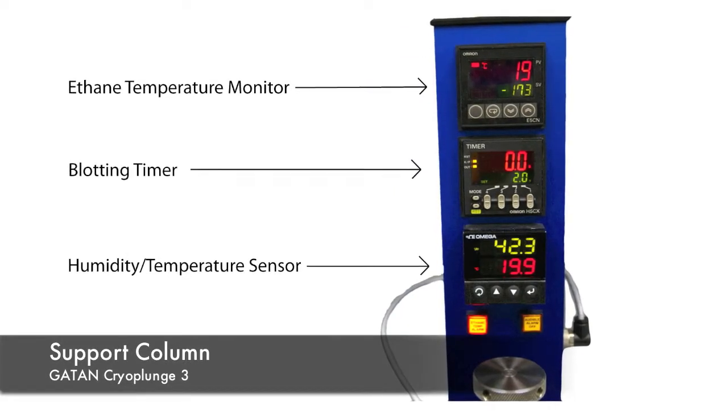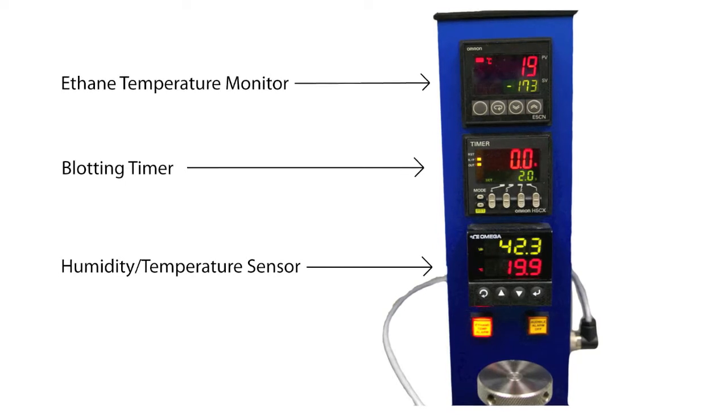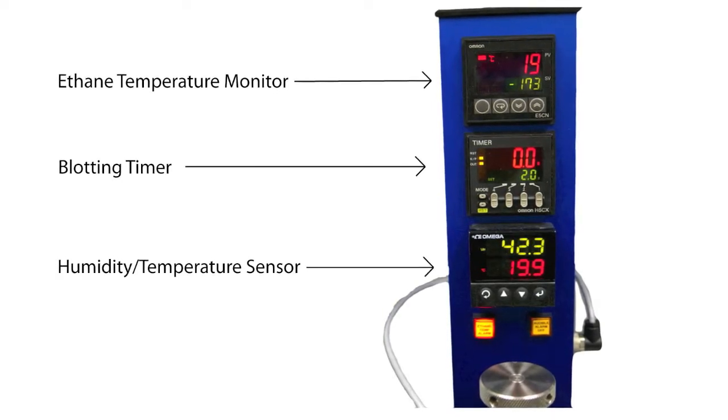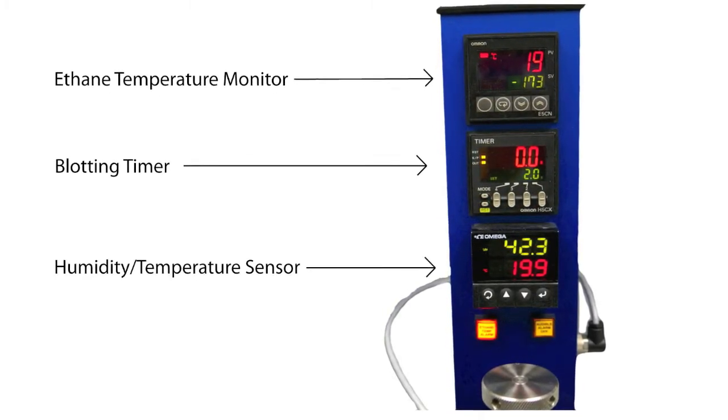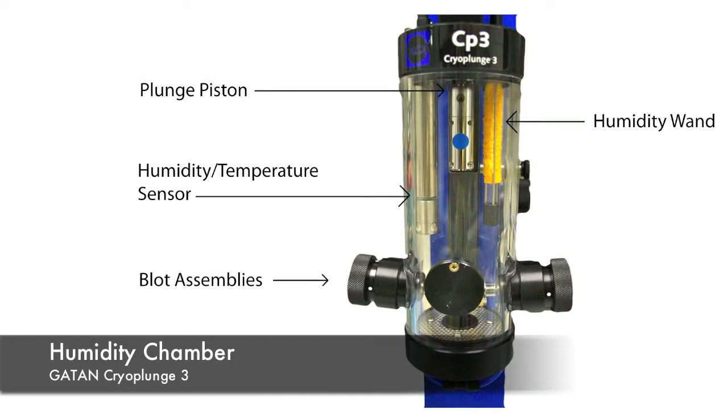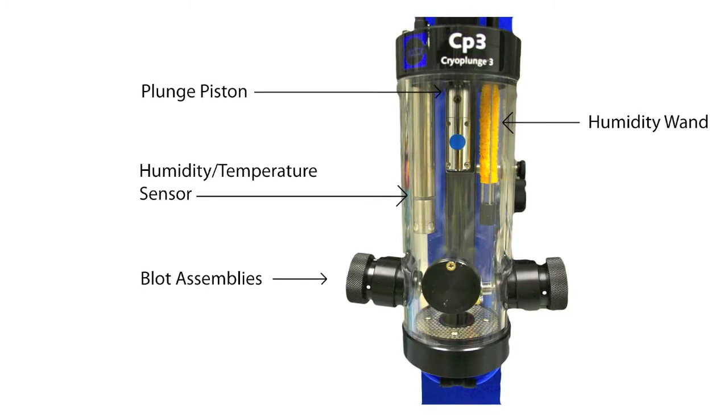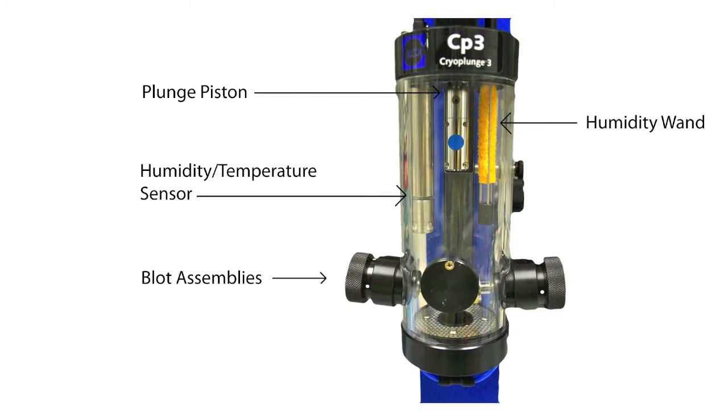The support column located at the top of the cryo plunger contains the ethane temperature monitor, the blotting timer, and the humidity temperature meter. Underneath the support column lies the plunge piston, the humidity temperature sensor, the humidity wand, and the blot assemblies.